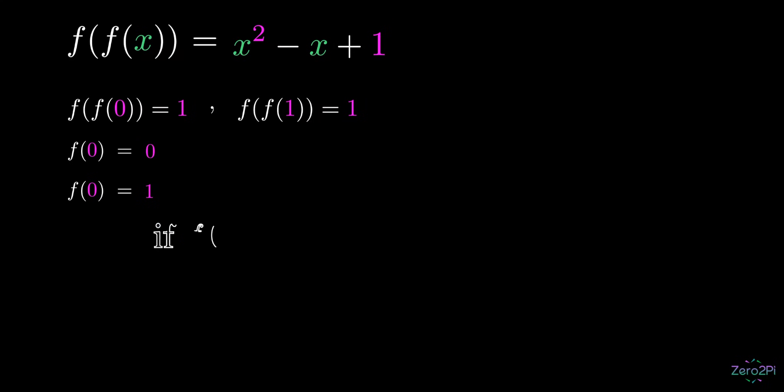If f of 0 equals 0, then f of f of 0 equals f of 0, which is equal to 0. This is contradictory, because earlier we proved that f of f of 0 equals 1.